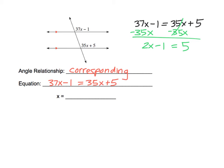Now that we have all the variables on one side, let's move all the numbers to the other side. So we want to undo the minus 1, so I'm adding 1 on both sides. And that gets us down to 2x equals 6.